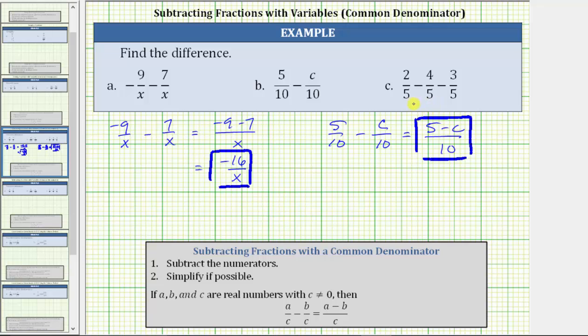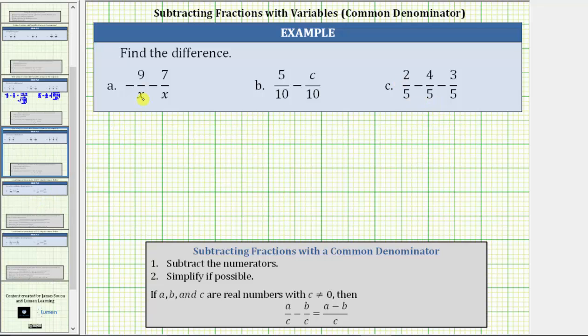Let's look at c on the next slide. For c, we have two-fifths minus four-fifths minus three-fifths. We have a common denominator. The denominator remains five. And we subtract the numerators, which gives us two minus four minus three.